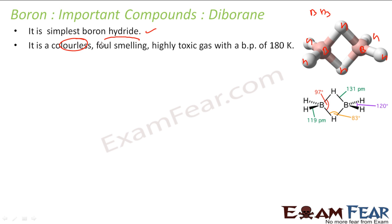Diborane is colorless, it is very foul-smelling, it is a very toxic gas, and has a boiling point of 180 Kelvin — a very low boiling point.